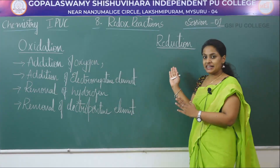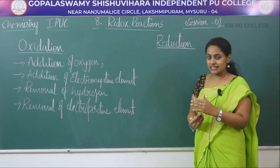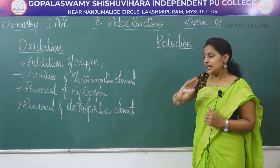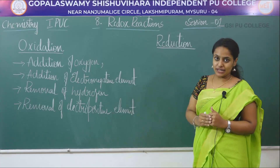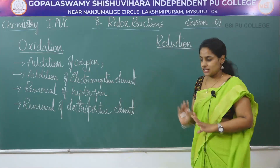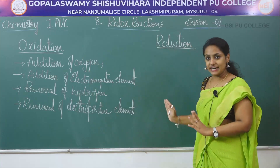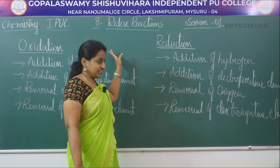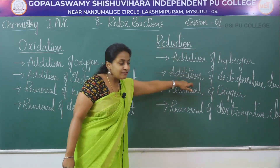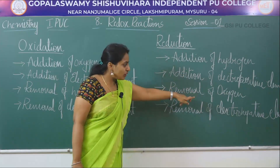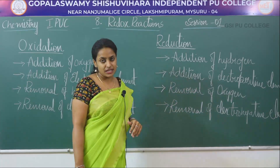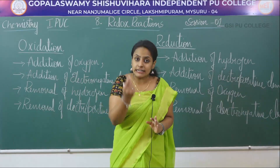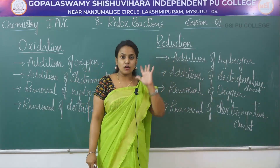What do you mean by reduction? Reduction is the opposite of oxidation — it involves the addition of hydrogen, addition of an electropositive element, removal of oxygen, and removal of an electronegative element. So reduction is the reverse of oxidation: addition of hydrogen, addition of electropositive element, removal of oxygen, and removal of electronegative elements. This is the classical concept of oxidation and reduction, which you have already studied in high school.